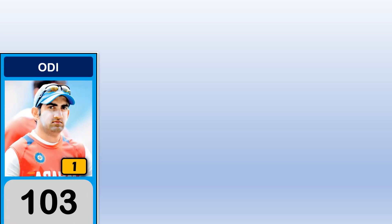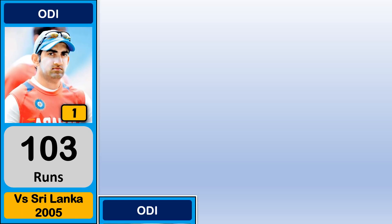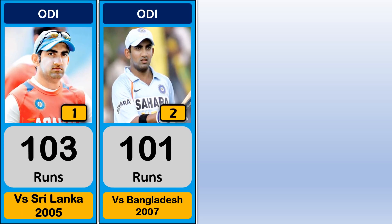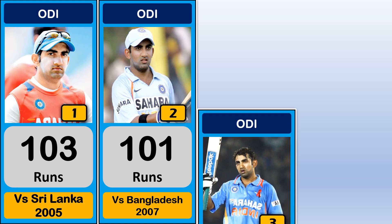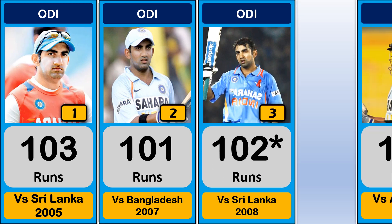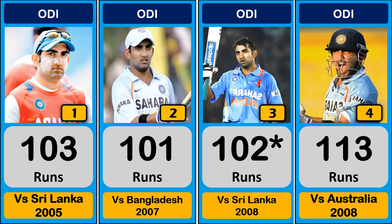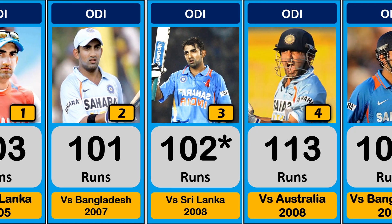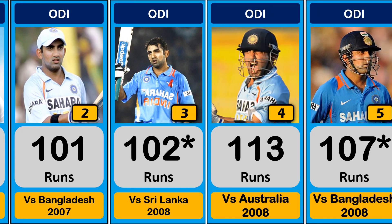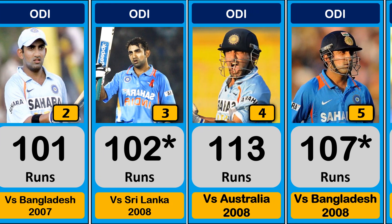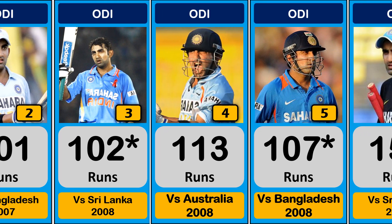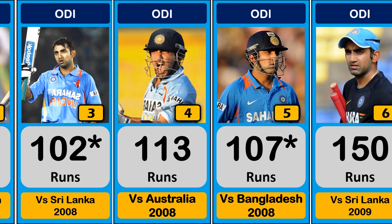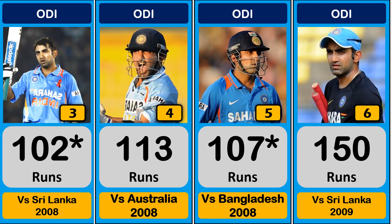Ghotham Gambi, all centuries list. 103 runs against Sri Lanka, 101 runs against Bangladesh, 102 runs against Sri Lanka, 113 runs against Australia, 107 runs against Bangladesh.